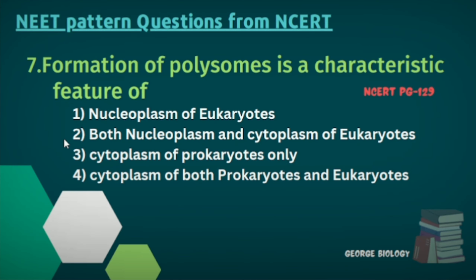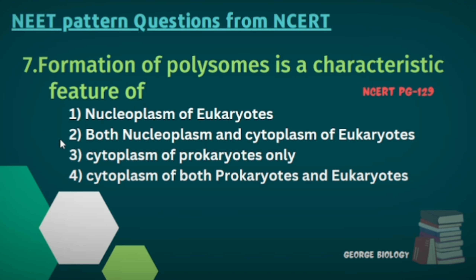Number seven: Formation of polysomes is a characteristic feature of — nucleoplasm of eukaryotes; both nucleoplasm and cytoplasm of eukaryotes; cytoplasm of prokaryotes only; cytoplasm of both prokaryotes and eukaryotes. The answer is the fourth option. Polysomes are also called ergasomes or polyribosomes.